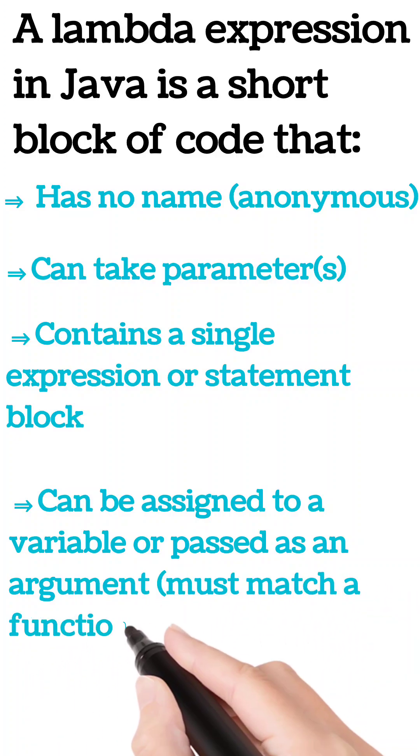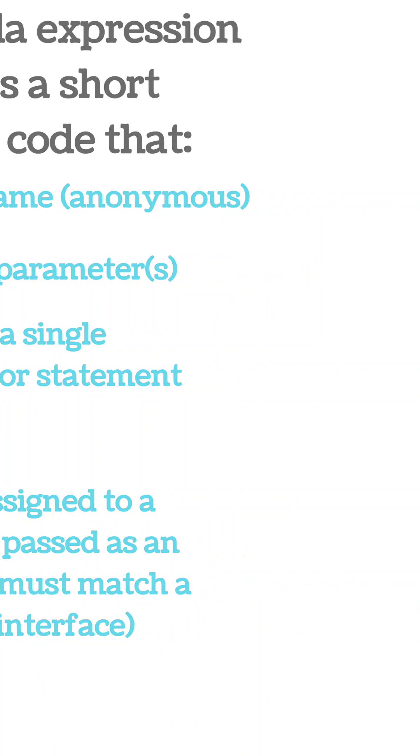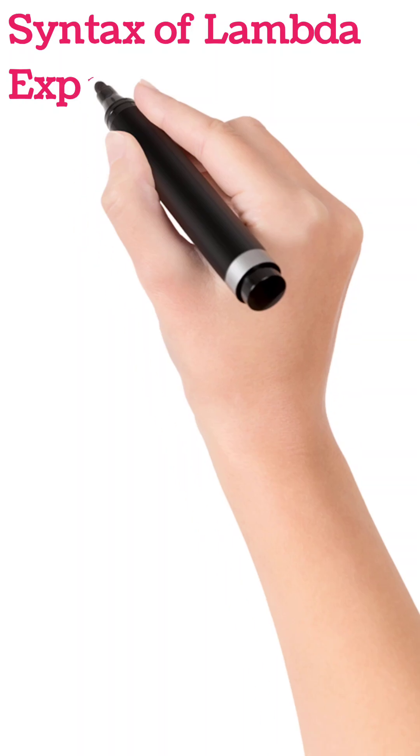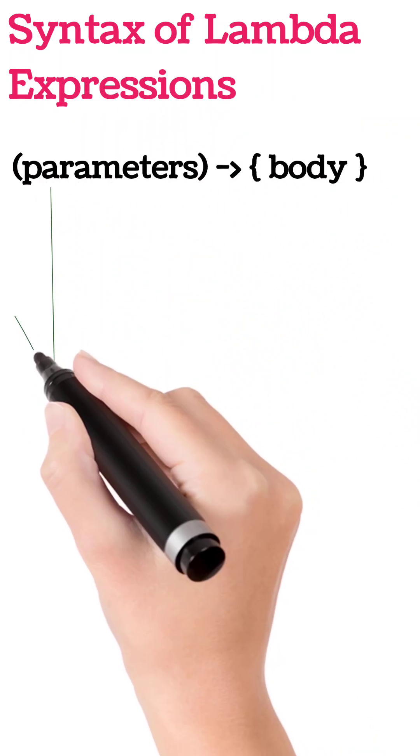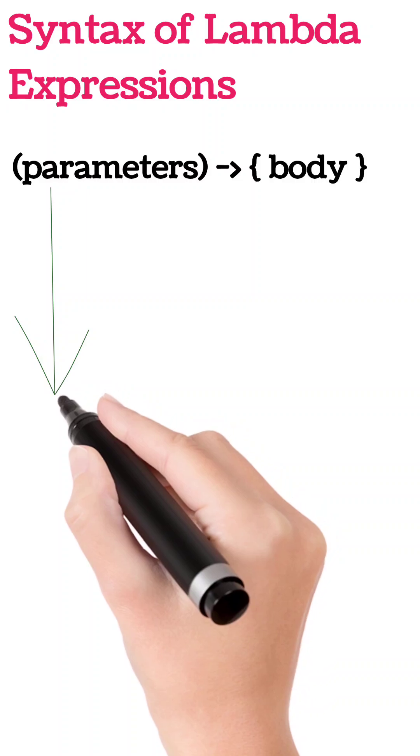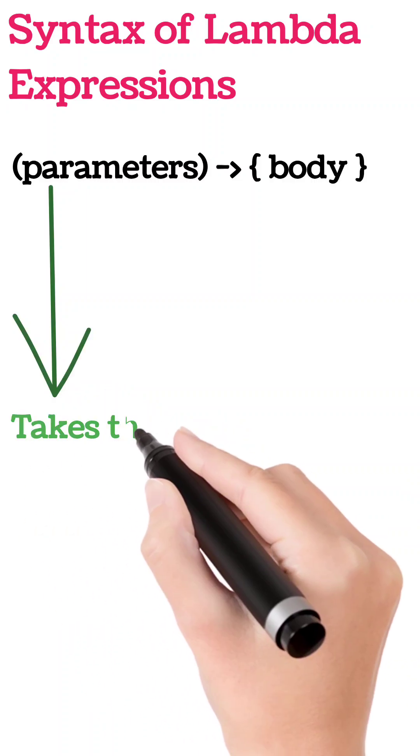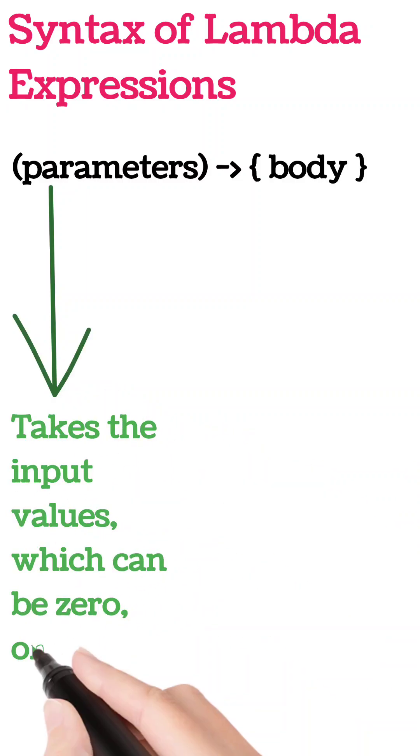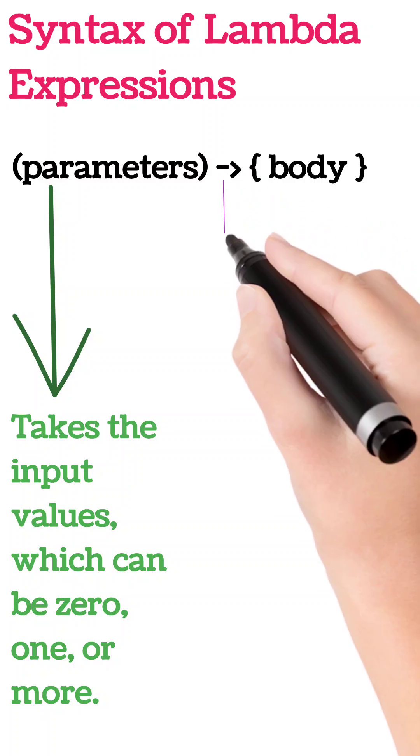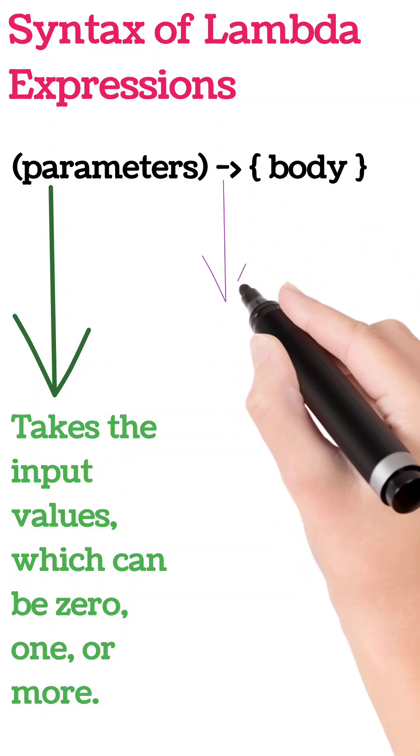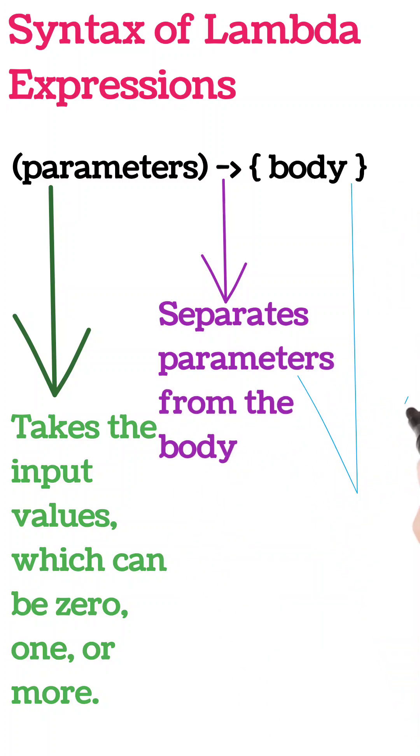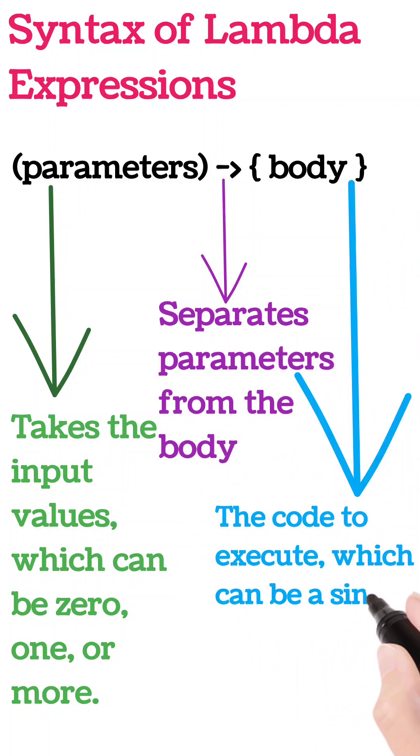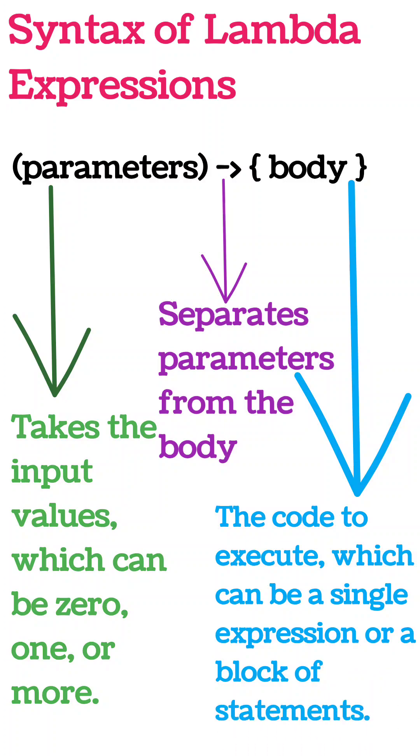Let's see the syntax of lambda expressions. A lambda expression consists of three main parts. First is the parameter that takes input values, which can be zero, one, or any number. Second is the arrow token, which separates parameters from the body. Third is the body, the code to be executed, which can be a single expression or a block of statements.